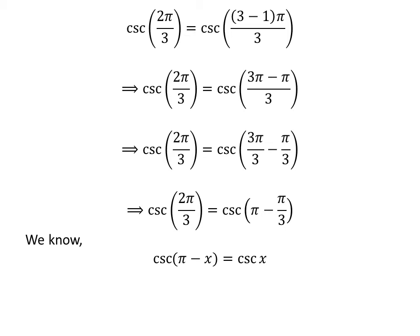We know the famous trigonometry identity cosecant of pi minus x is equal to cosecant of x. The proof of the identity has been explained in the video appearing in the upper right corner of this video. The link of the video is also given in the description section.